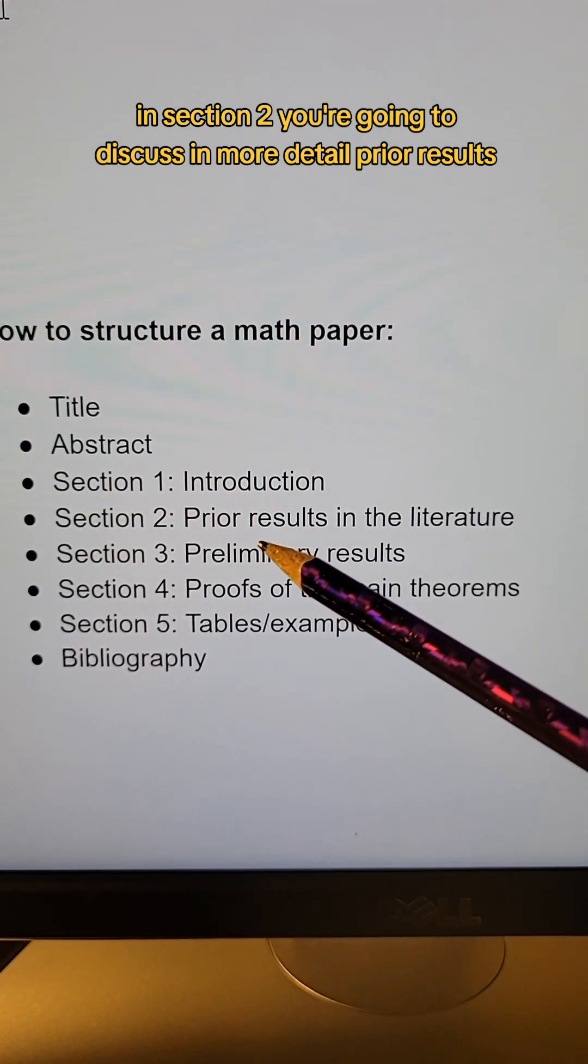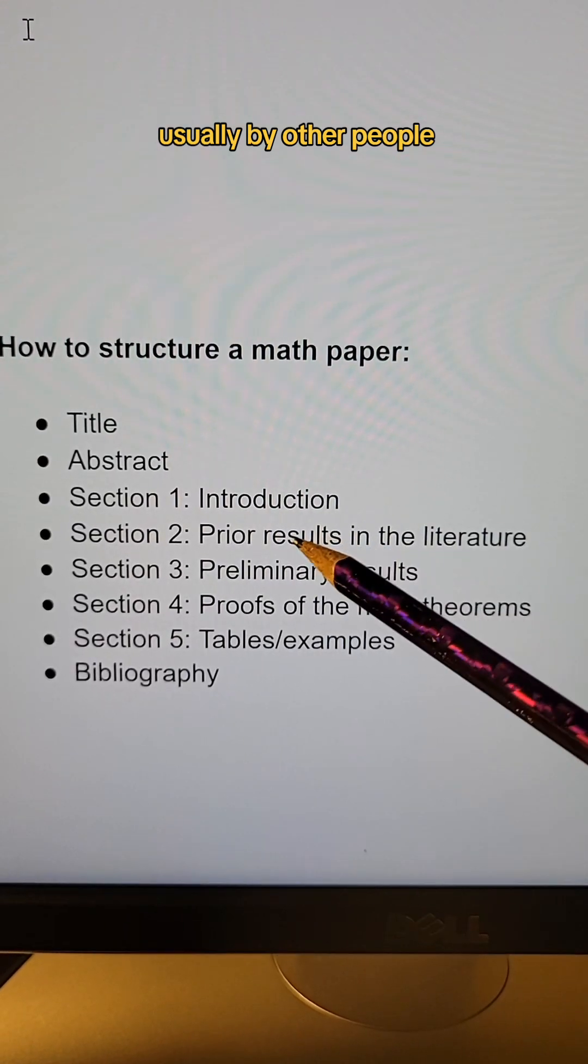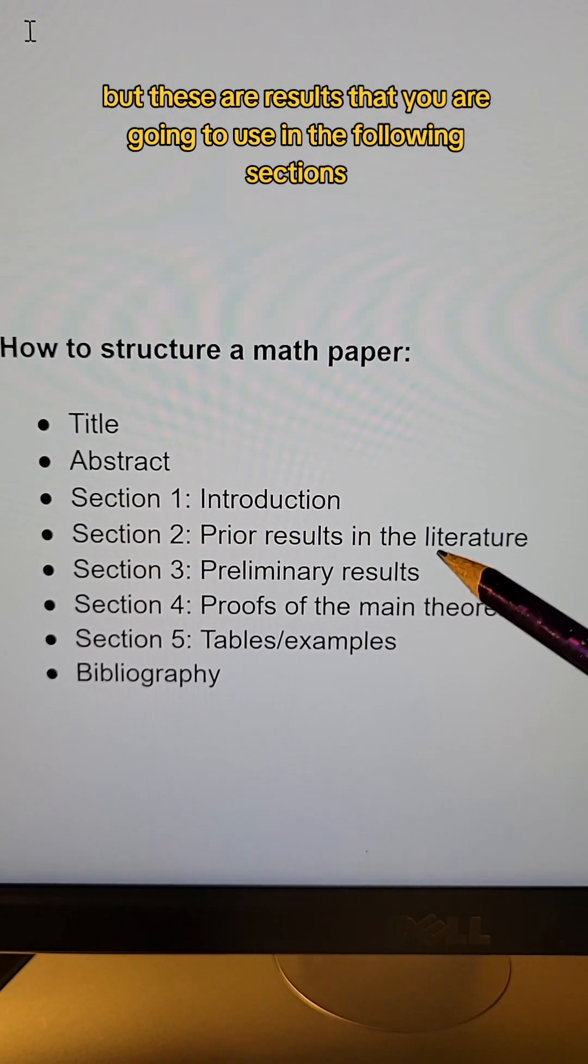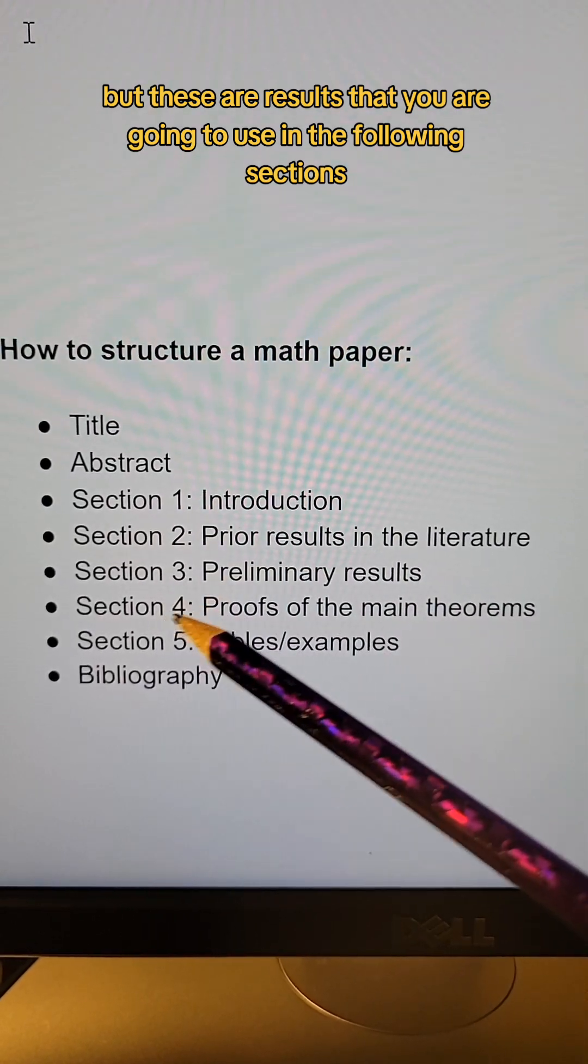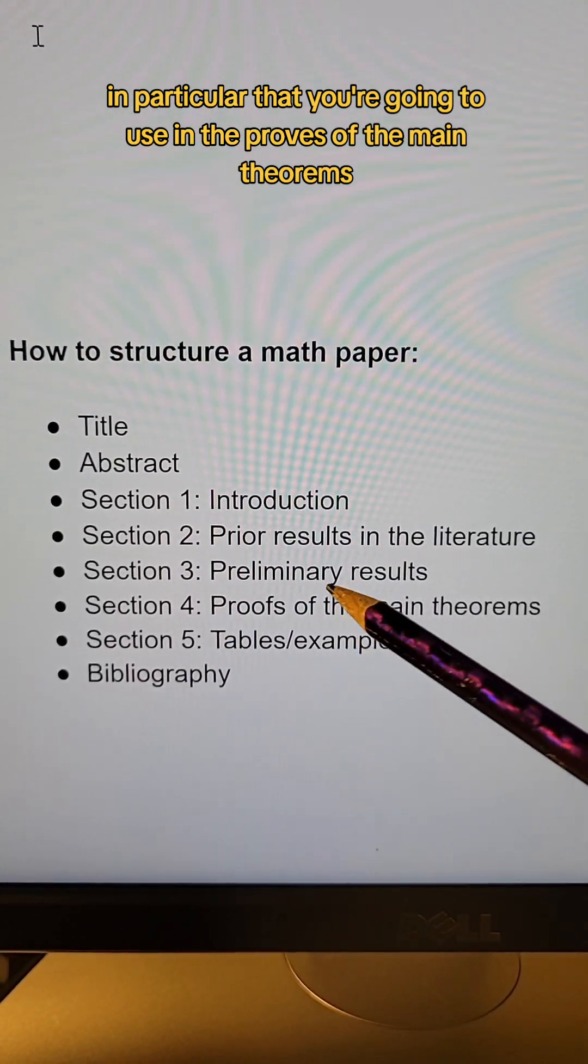In section two, you're going to discuss in more detail prior results, usually by other people, results in the literature, but these are results that you are going to use in the following sections, in particular that you're going to use in the proofs of the main theorems.